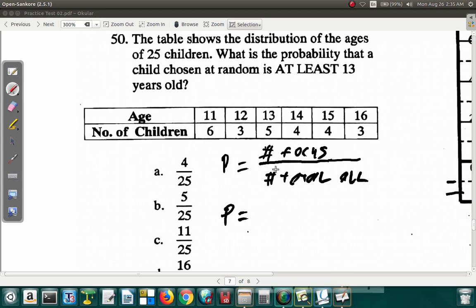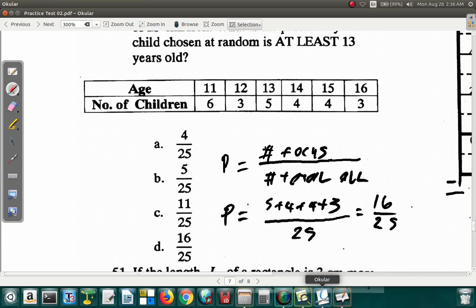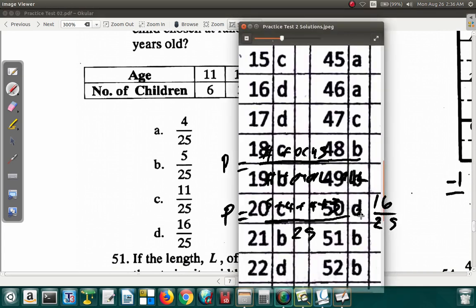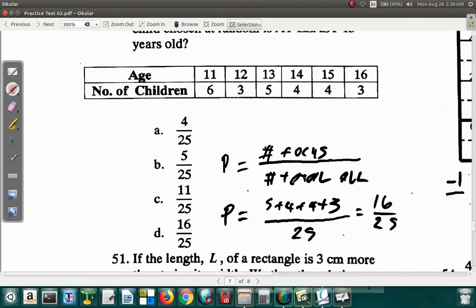So the probability here is how many you're focusing on. You're looking at at least 13. So the number of children that are 13 or older is 5 plus 4 plus 4 plus 3 over the total number available is 25. So let's see. 4 and 4 is 8, 9, 10, 11. 11 and 5 is what? 16. 16 over 25. I don't see where you can cancel anything. So this is saying that the answer to question 50 is D. Question 50 D. Right? Question 50 is D. Alright. Let's take a break from it and continue next time.